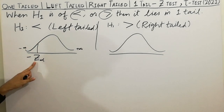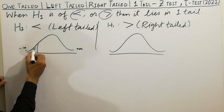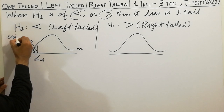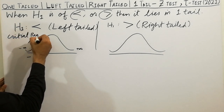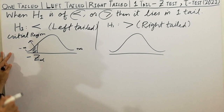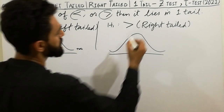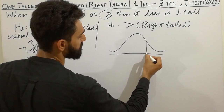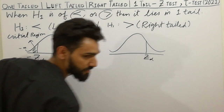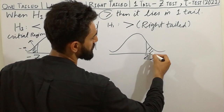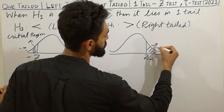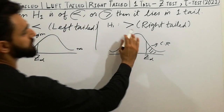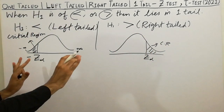This left side shows the critical region, also called the rejection region, with the boundary at minus Z-alpha. On the right side, the boundary point is Z-alpha, and the region to the right of Z-alpha is the critical region — the rejection region for the right-tail test.